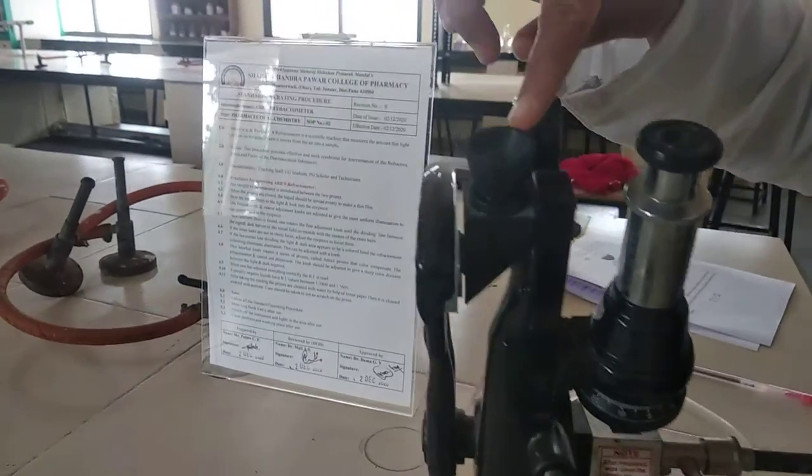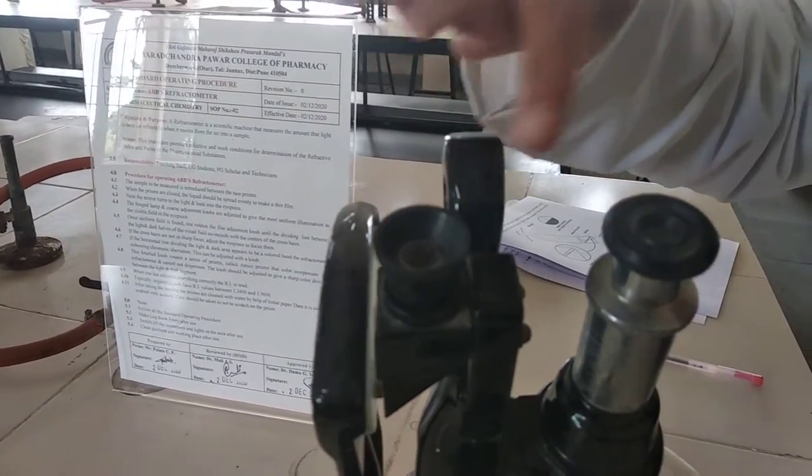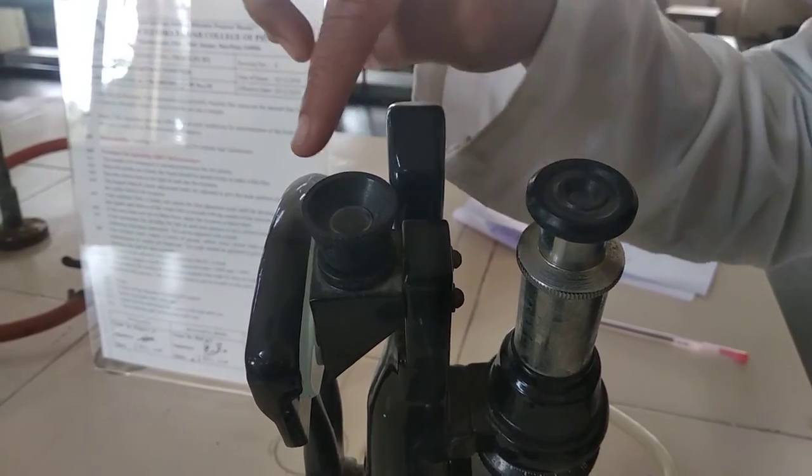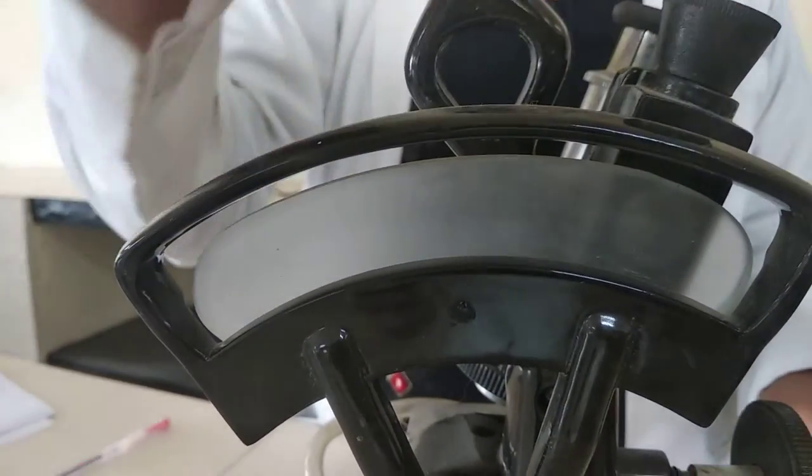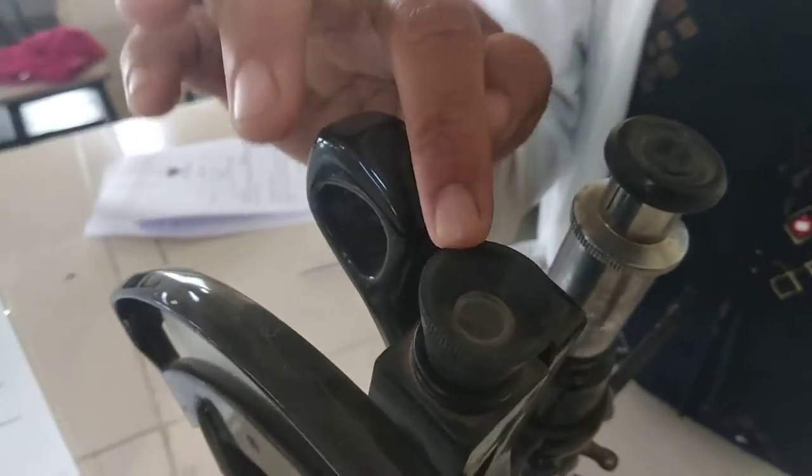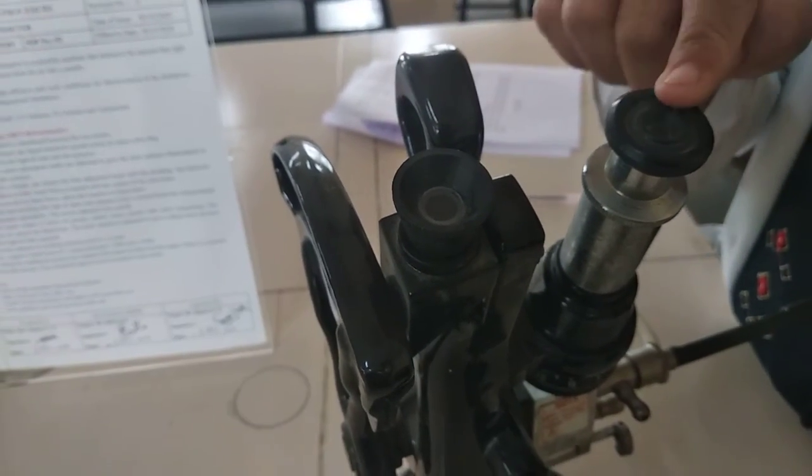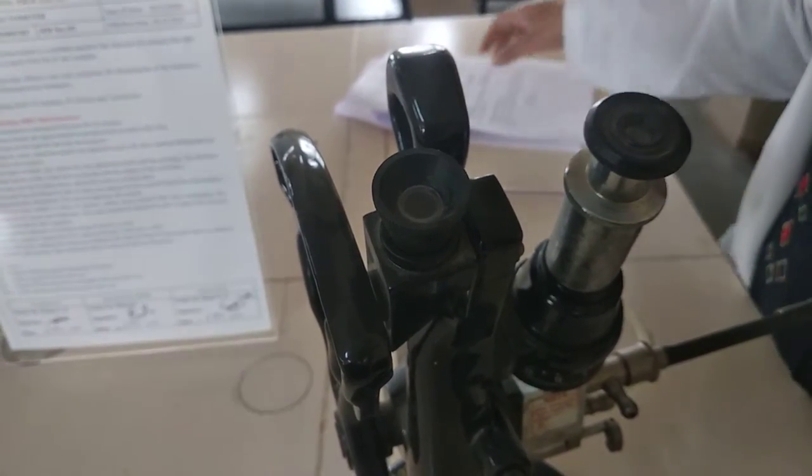Afterwards, it contains two eyepieces, first and second. This eyepiece, one is attached with a measuring scale. Just see the measuring scale. This eyepiece is used to observe the measuring scale. And the first one, this eyepiece, it is used to observe the dark and light mark.